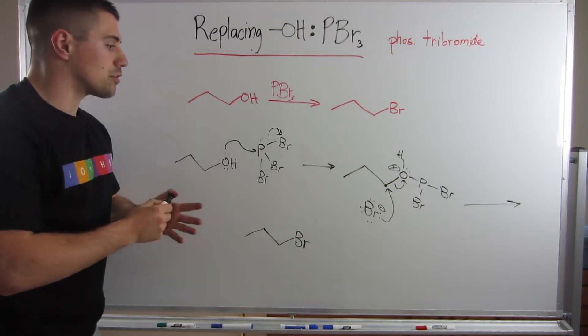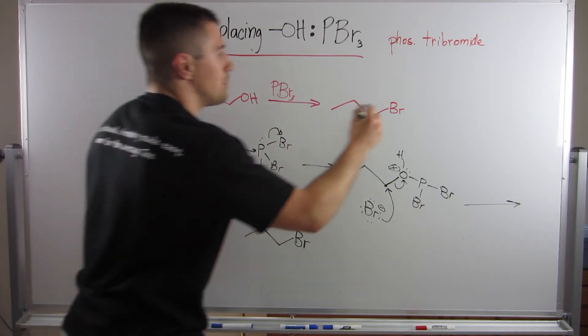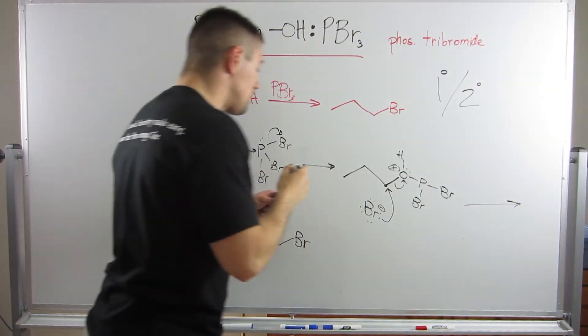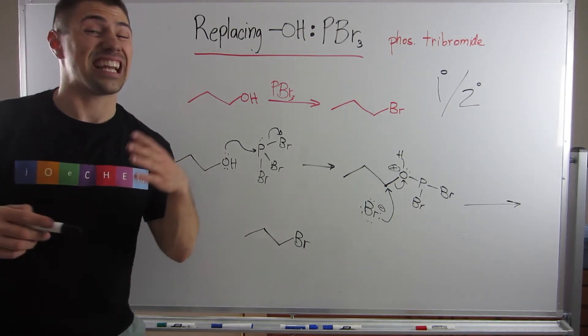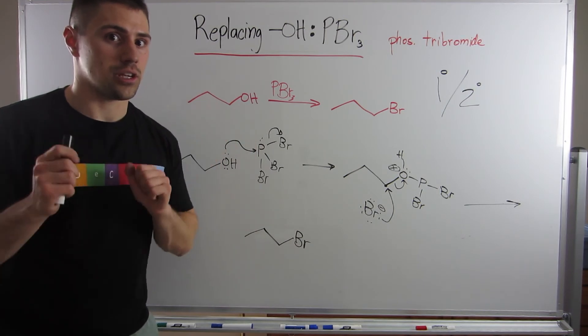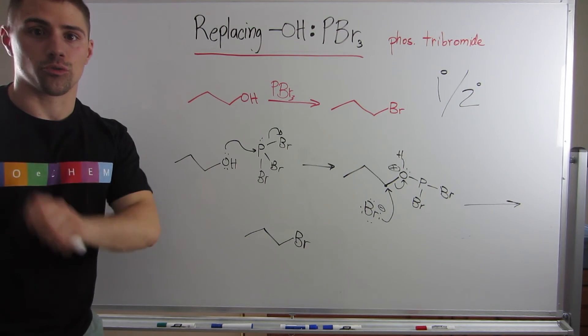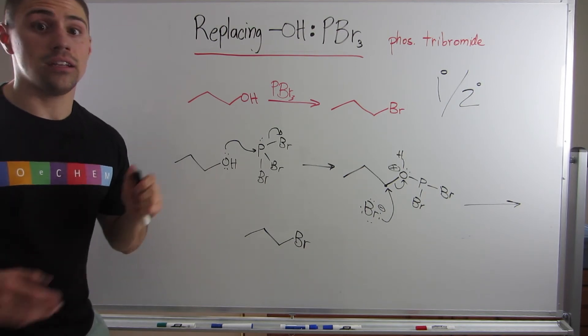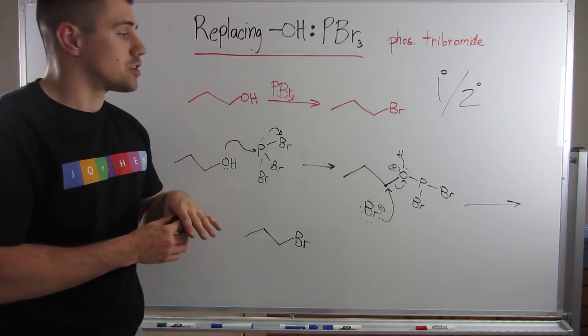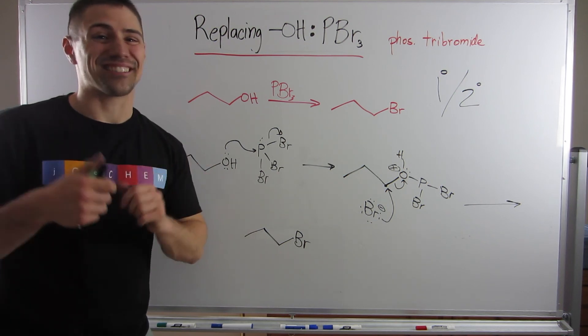So again, another good SN2 reaction to replace an OH, and this is great in the primary and secondary situations. Obviously, we can't do this in the tertiary situations because it's an SN2 reaction, and we know no SN2 in the tertiary situation. Okay, so PBr3, SOCl2 are great reactions to kind of put in your back pocket for synthesis, and maybe even like fill in the reagent questions. So thanks for tuning in, guys. I hope you thought both of these were not so bad, and I'll see you in the next video.